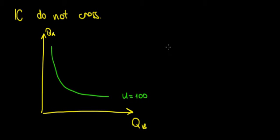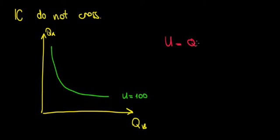Just for the sake of the example, let's suppose we have a utility function. This is not going to be linear because it has a curve, so let's say something quadratic — let's call it quantity of apples squared plus 3 times quantity of bananas.